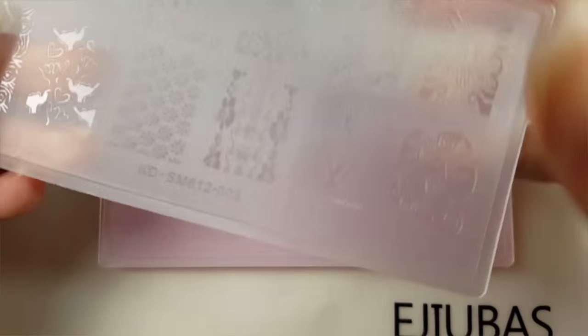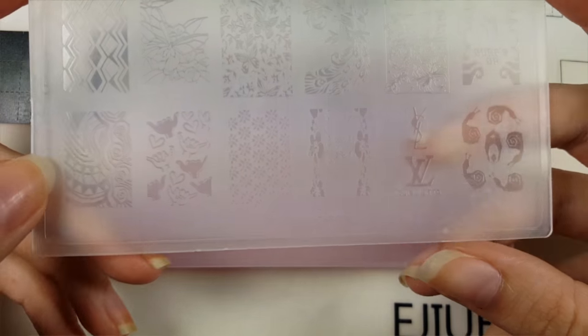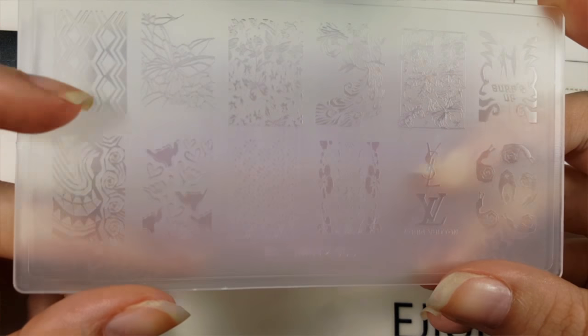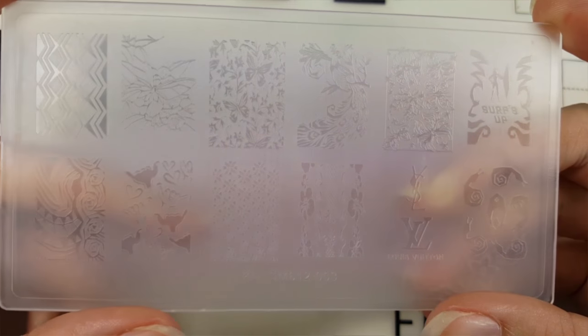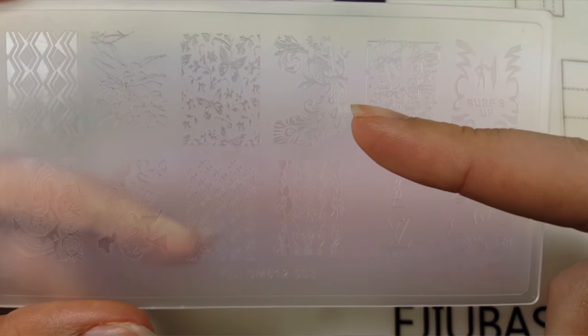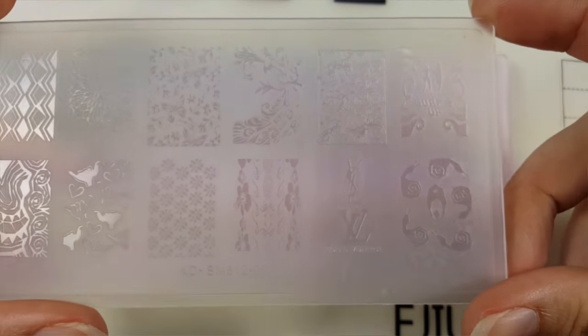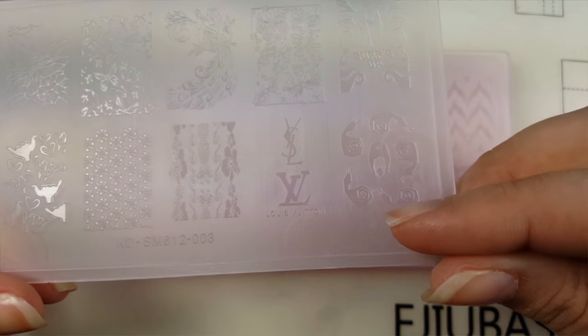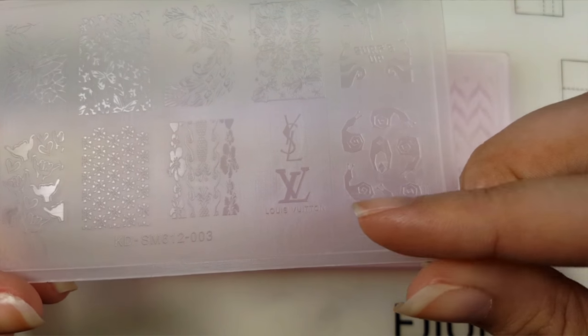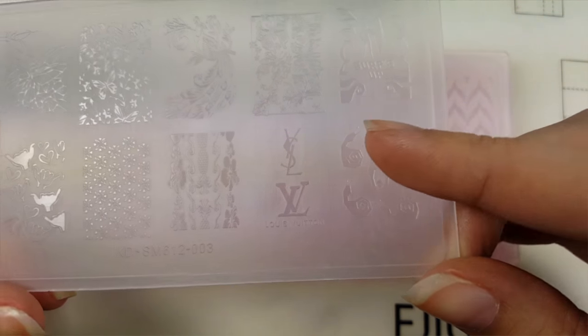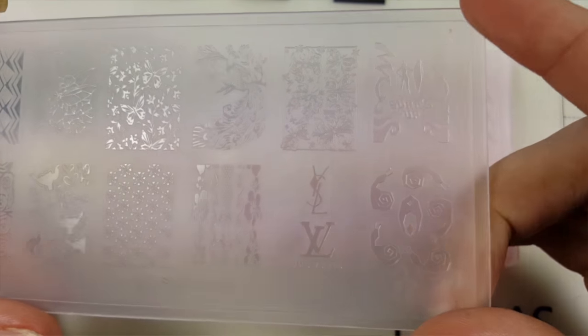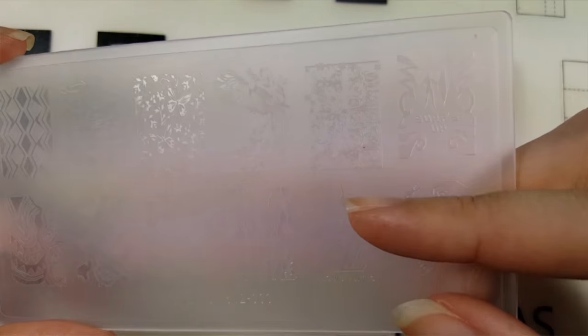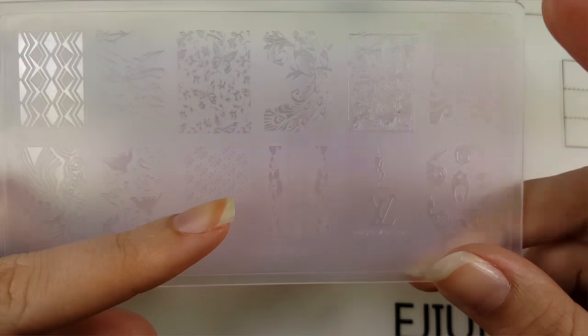Here is plate number three. You have love and a butterfly and different patterns, lots of butterflies. You've got a peacock. I think this is actually my favorite plate in the set. It says Surfs Up, you have Louis Vuitton, you have snails.